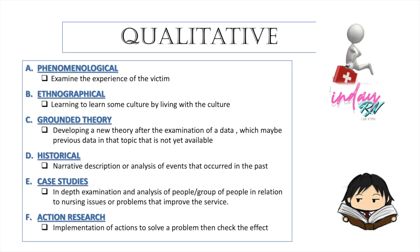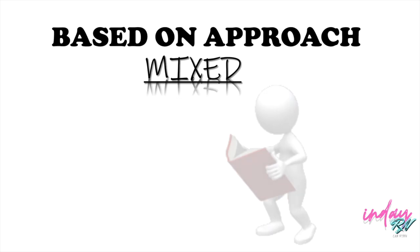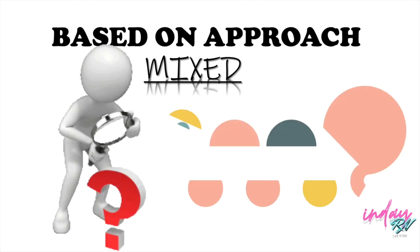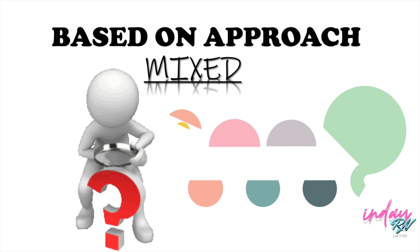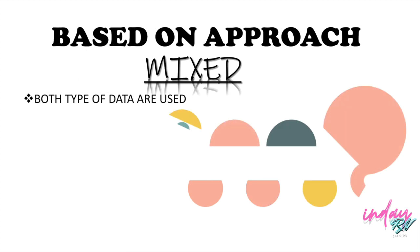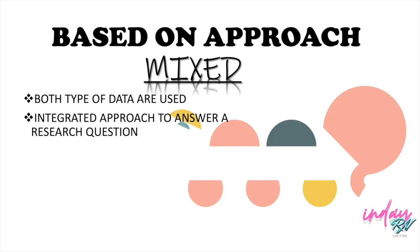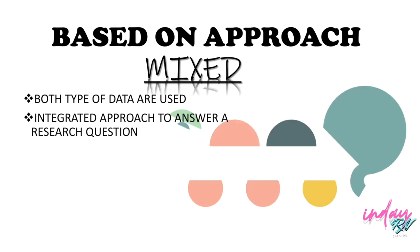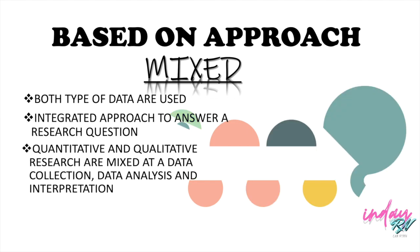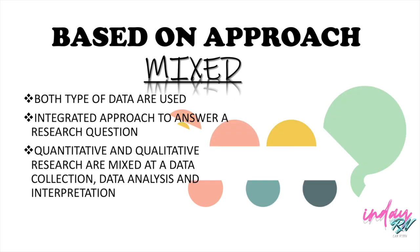And the last one here in Based on Approach is Mixed Research. Before we discuss the types of mixed research, we need to understand what mixed research is. Mixed researches use both types of data — it can be qualitative or quantitative data. It is an integrated approach to answer a research question, a collaboration between the quantitative and qualitative. Here in mixed, we are going to use both quantitative and qualitative researches in order to answer questions and to collect, analyze, and interpret data.